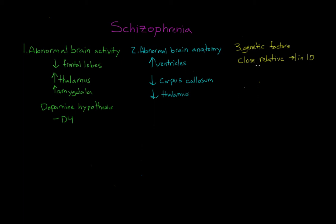This makes sense: if schizophrenia is genetically driven, you would assume that having a parent or sibling with it would increase your own chances, since you share genetic material. This is further supported by evidence from studies with identical twins, which have found that if one twin has the disorder, the other has a 1 in 2 chance of having it as well — and this is true even when the twins are separated and raised by different families.